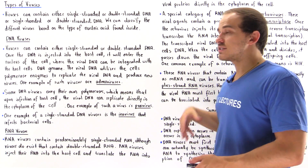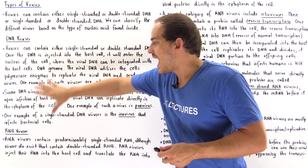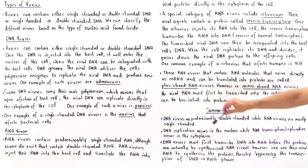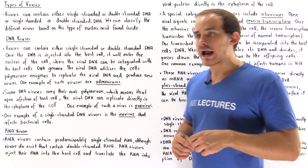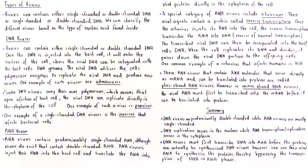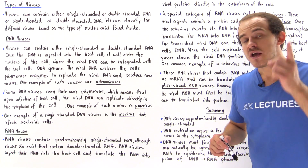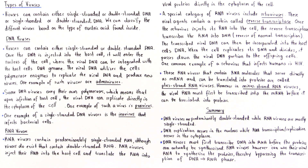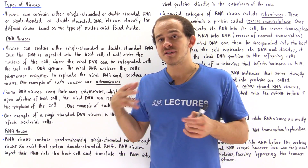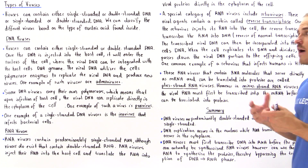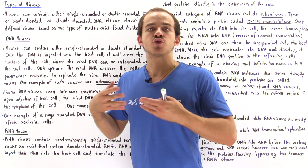Let's summarize the major differences between DNA and RNA viruses. First, DNA viruses predominantly exist in the double-stranded form, while RNA viruses predominantly come in the single-stranded form. Second, DNA replication occurs in the nucleus, while RNA transcription and replication take place in the cytoplasm. Third, DNA viruses must first transcribe DNA into RNA before proteins can be synthesized, whereas RNA viruses can use their RNA to bypass the DNA-to-RNA transcription process.